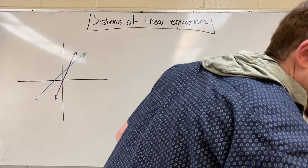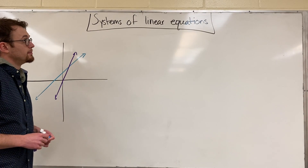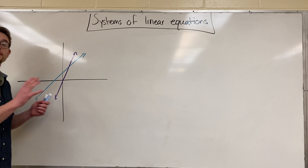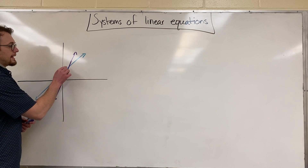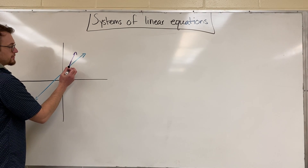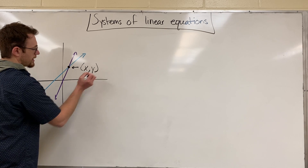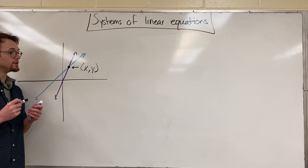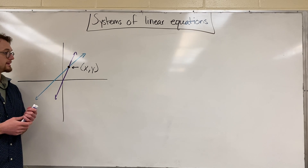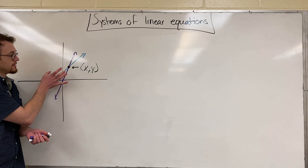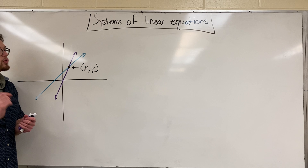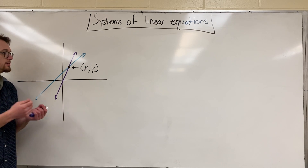All right, back at it again — got some systems of linear equations. This is going to build off my last video where we talked about how a system of two linear equations, or a system of any equations: the solution is the point of intersection. So the solution of this system — this linear equation and this linear equation — would be this xy coordinate. That's where those two equations are equal.